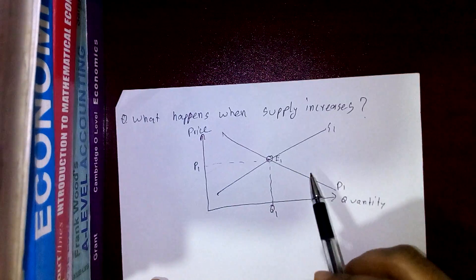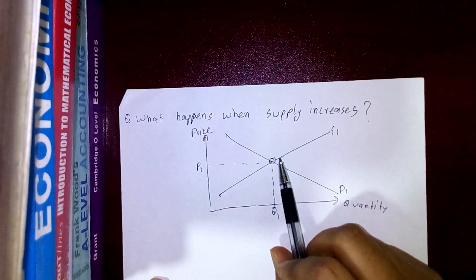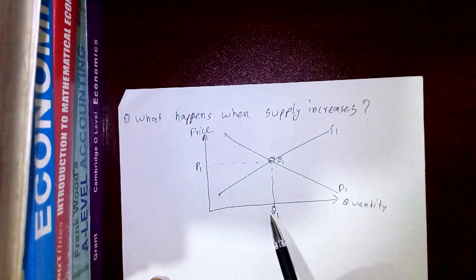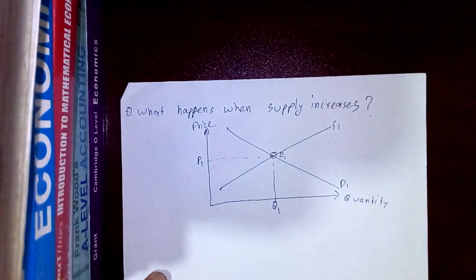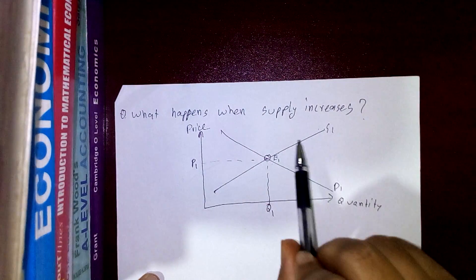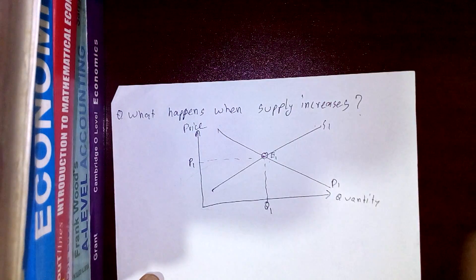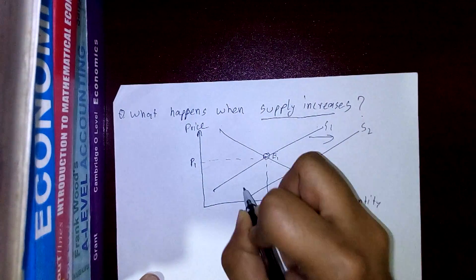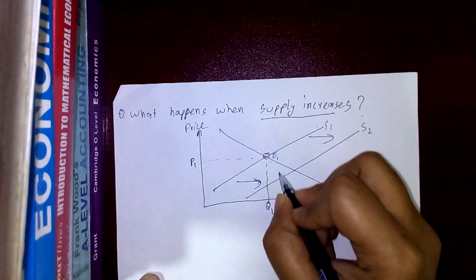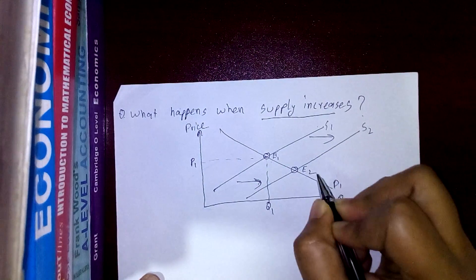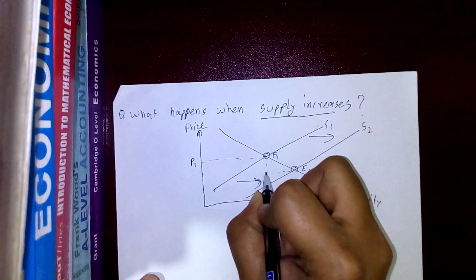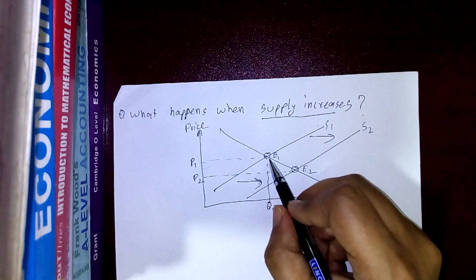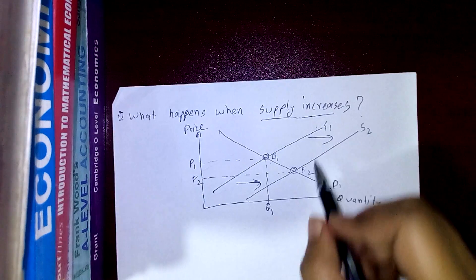To understand the effect of an increase in supply, we first draw our demand and supply curve. Price on the vertical axis, quantity on the horizontal axis, with supply curve S1 and demand curve D1. The equilibrium is E1, market price is P1, and quantity traded is Q1.